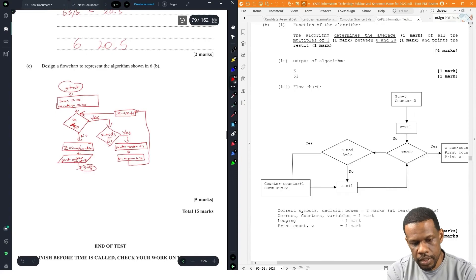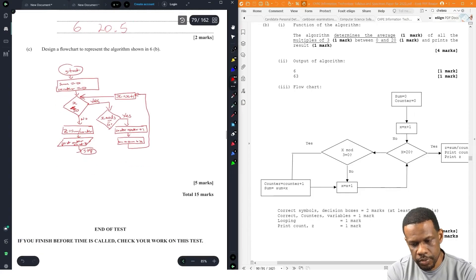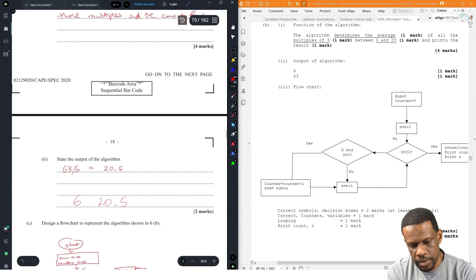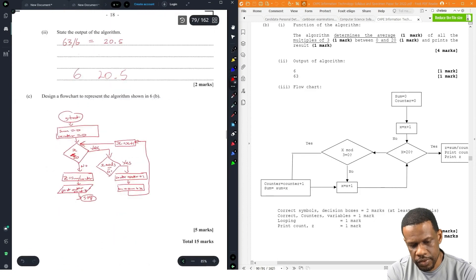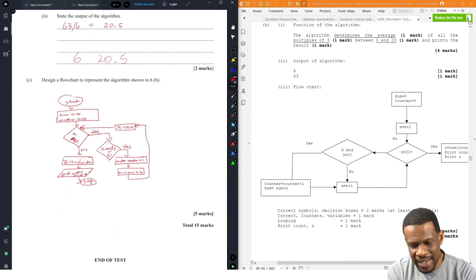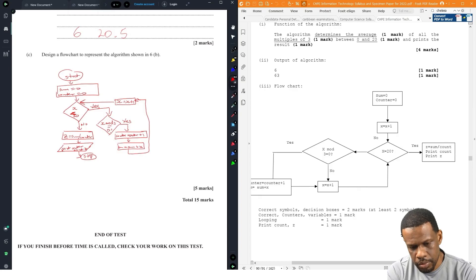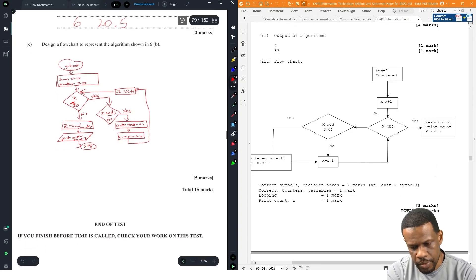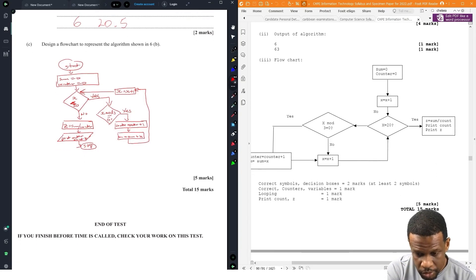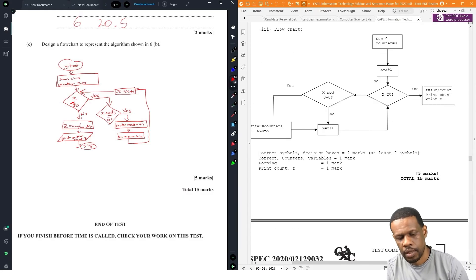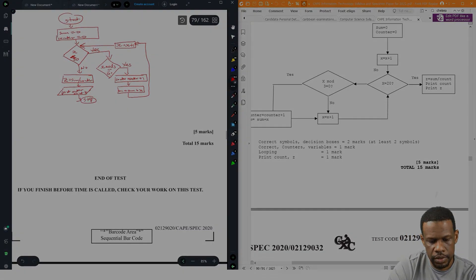So we have the sum and counter set to zero. They have X equals X plus one. They have for X equals one to 20, so the counter started at zero. If X is not equal to 20, then you check the mod. Counter. Print count, print Z. Five marks. Correct symbols, decision boxes, two marks. Correct counters and variables, one mark. Looping, one mark. Print count and Z, one mark. Five marks total. No issues there. The flowchart was straightforward.